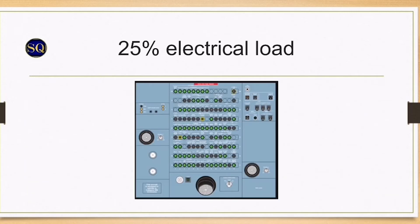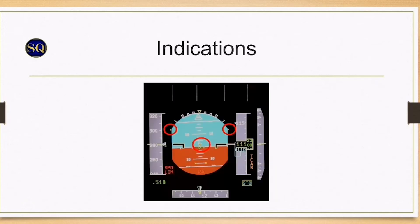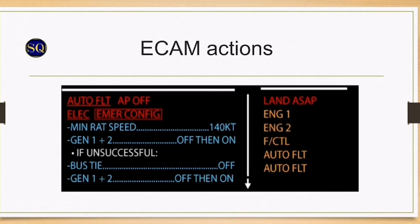All equipment that remains powered is supplied via the circuit breakers on the overhead panel, except for equipment supplied by hot buses. Turn flight directors off and select track FPA. The aircraft will be in alternate law. Once a safe flight path is established, ECAM actions should be carried out.